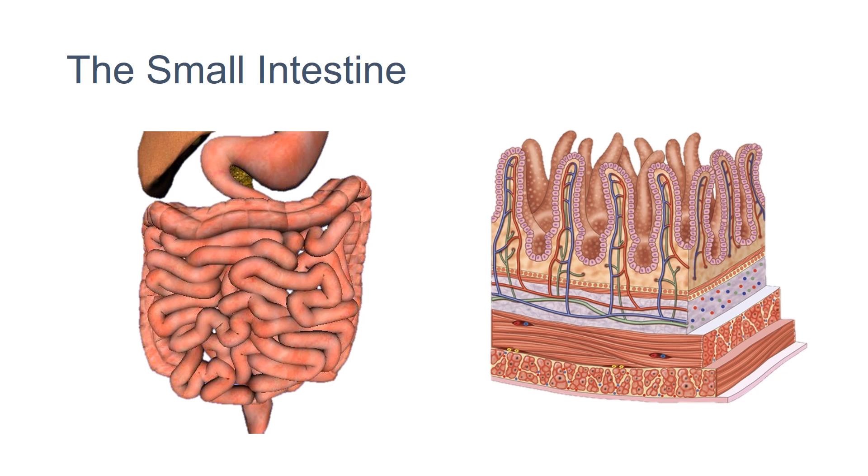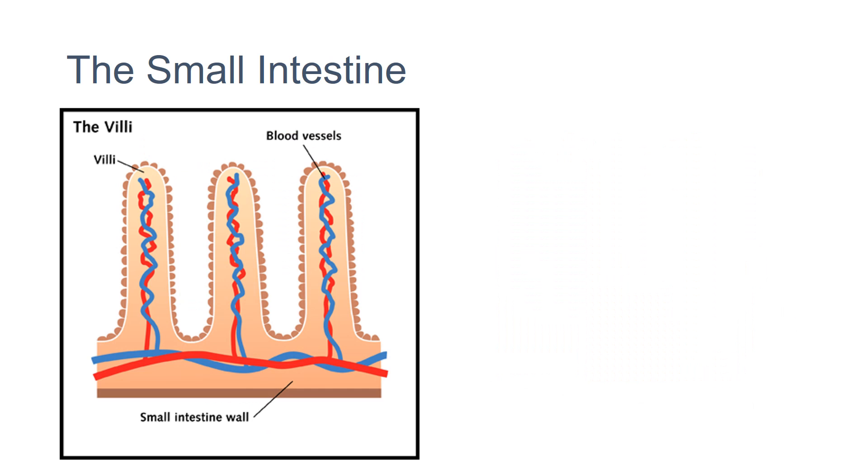As well as in plant cells, active transport is also important in the small intestine. The inner surface of the small intestine is covered in villi to increase the surface area.